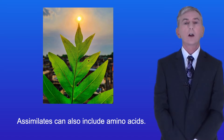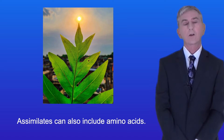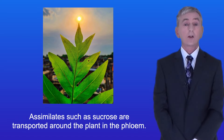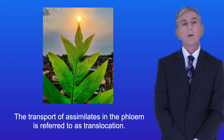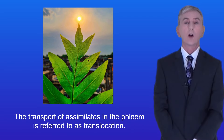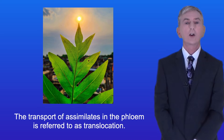Molecules such as sucrose which are made as a result of photosynthesis are called assimilates. Assimilates can also include amino acids. Assimilates such as sucrose are transported around the plant in the phloem, and the transport of assimilates in the phloem is referred to as translocation.